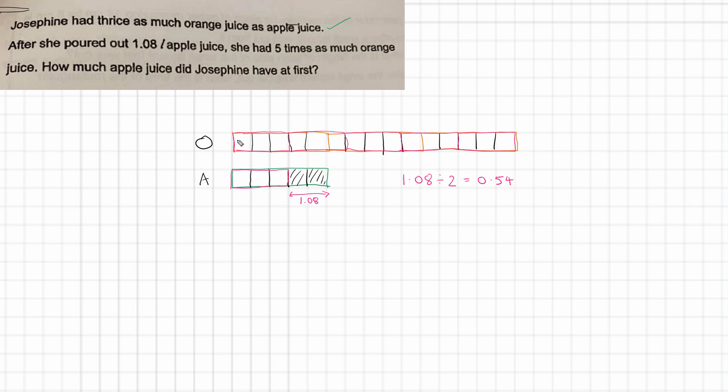So we now know the value of each of these. So this is 0.54, as is every other block here. And then we have to think, what actually is the question that we're being asked, which I should have underlined at the beginning. How much apple juice did Josephine have at first? Well, at first, I guess I should have labelled it. So that's how much at first. That's what Josephine had. She had five of these blocks, which we now know to represent 0.54. Well, 0.54 multiplied by 5 gives us 2.7 litres. So that's how much apple juice Josephine had at first.